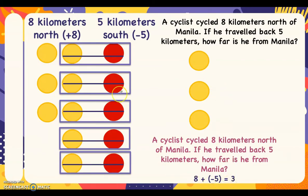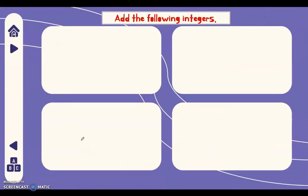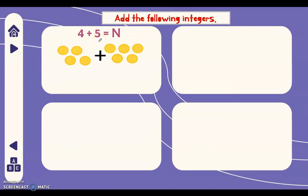Let's have more examples so you can visualize adding integers using colored chips. We have four plus five equals f. We represent four as four yellow chips plus five yellow chips, because they are all positive. We add all the chips since there are no red chips and no zero pairs can be formed. Our answer is nine — it's like adding whole numbers: four plus five equals nine.